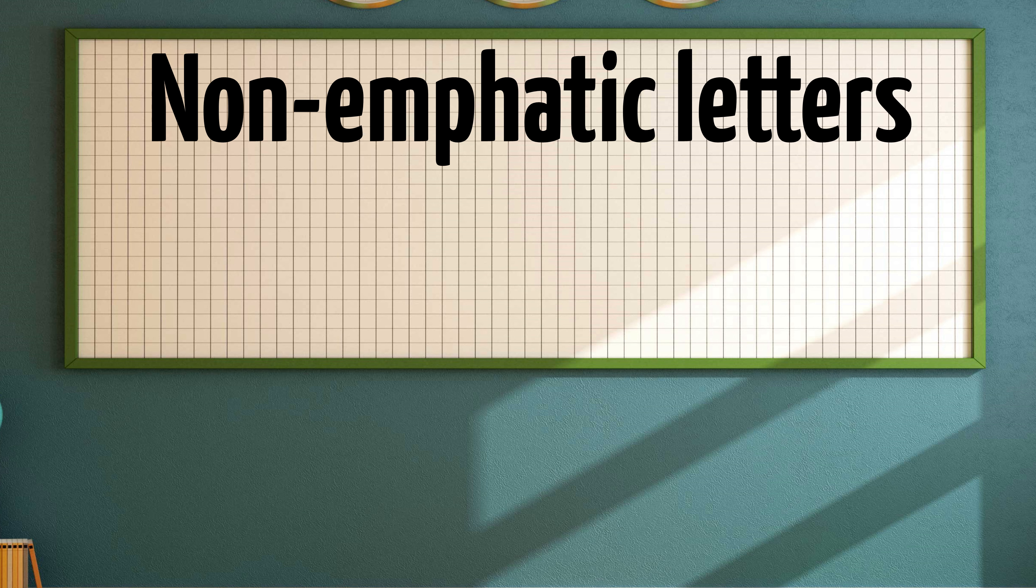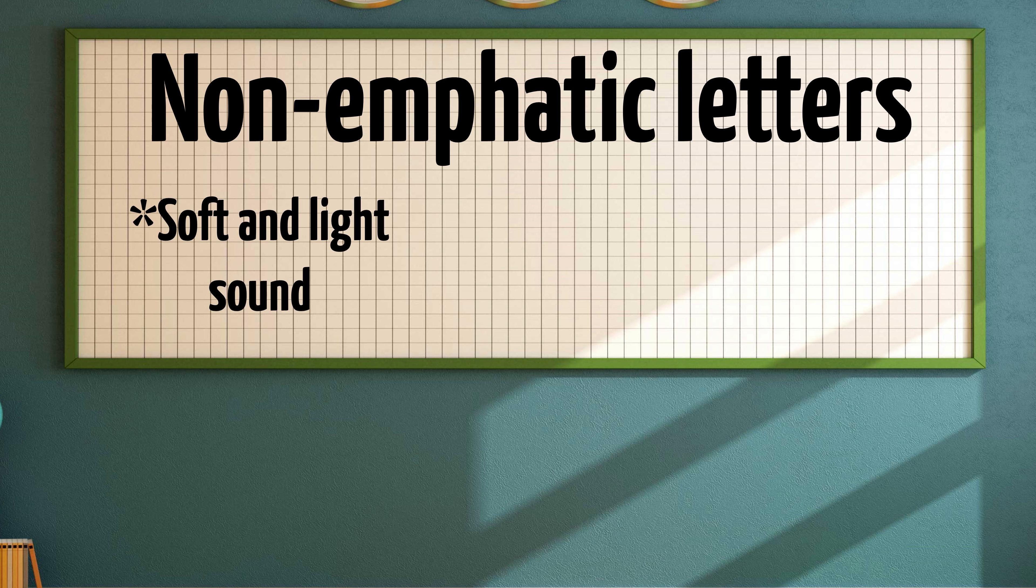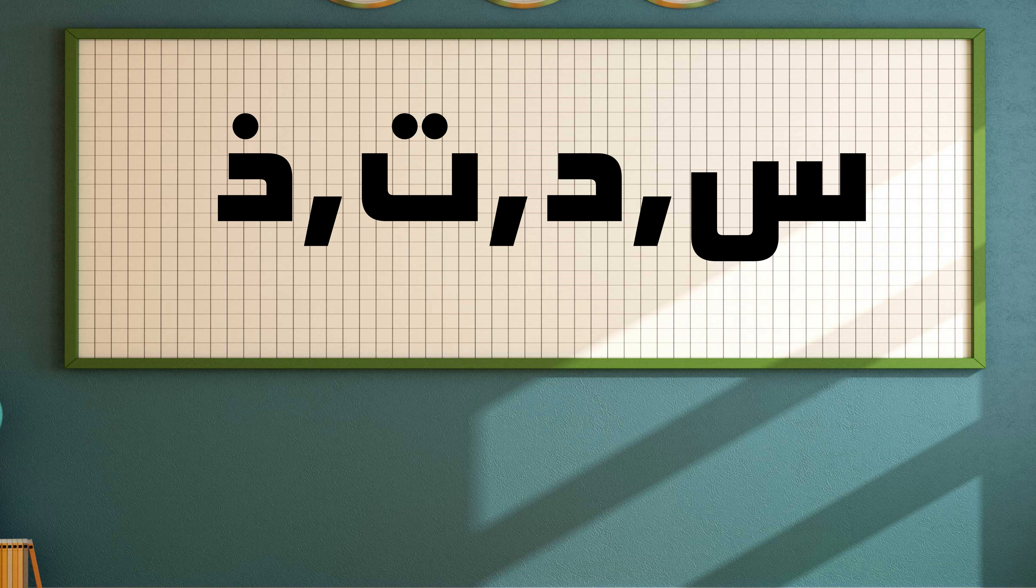And emphatic letters have their own corresponding non-emphatic letters that are pronounced in a much softer manner, and the back end of the tongue is not raised and is relaxed when you pronounce the corresponding non-emphatic letters. And those letters are Seen, Dal, Ta, and Thal. And that is everything when it comes to emphatic and non-emphatic letters of Arabic. Now let's move on and talk about the dotted letters.